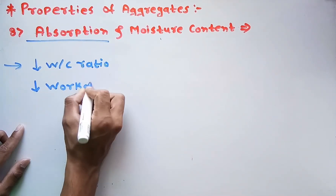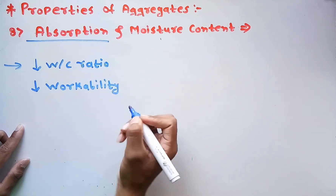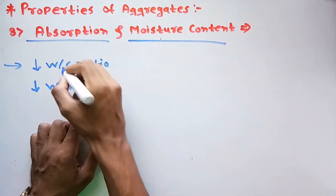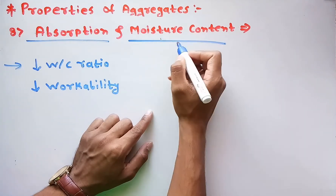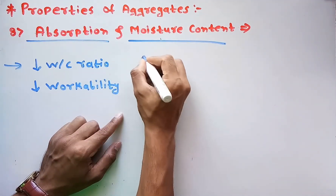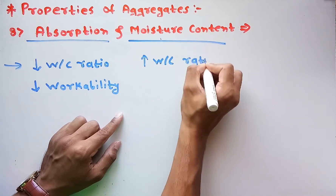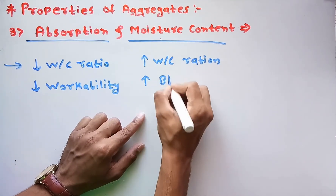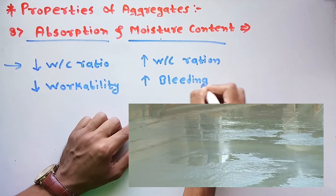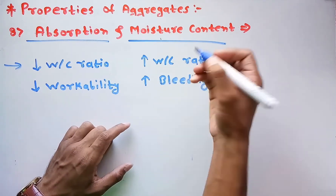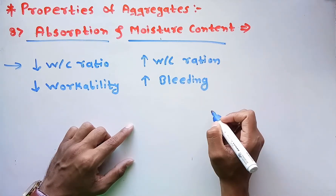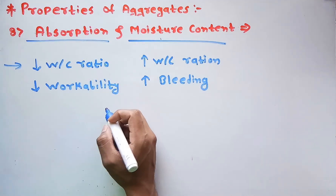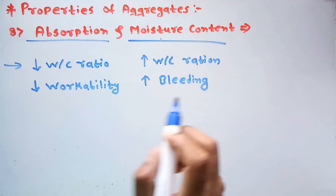In the moisture content case, exactly the opposite occurs. Since the aggregate contains its own body moisture, the water-cement ratio increases and workability increases, but it causes bleeding problems — where surface water comes out from the cement paste or concrete paste. This is the property we study while dealing with aggregates regarding absorption and moisture content.